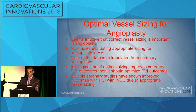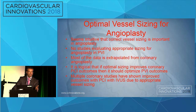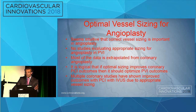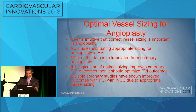In terms of optimal vessel sizing for angioplasty, we don't have a lot of data, so we have to be intuitive about it. There are really no studies that have looked at appropriate sizing for angioplasty in peripheral vascular intervention. Most of the data we use is extrapolated from coronary data, and it's logical that if optimal sizing improves coronary artery intervention, it's going to improve your peripheral vascular intervention as well.